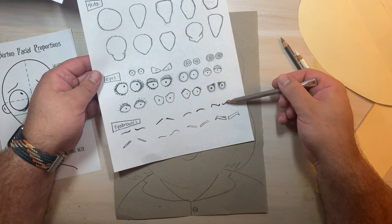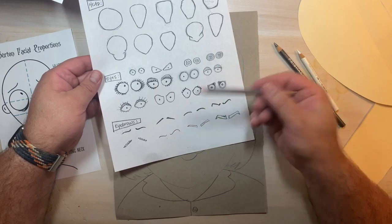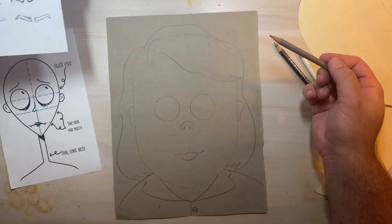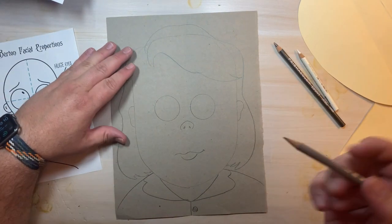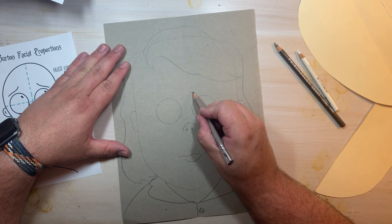In your idea sheet packet you'll also see examples of eyebrows and accents for the eyes. I'm going to choose two different style eyebrows and sort of merge them together.